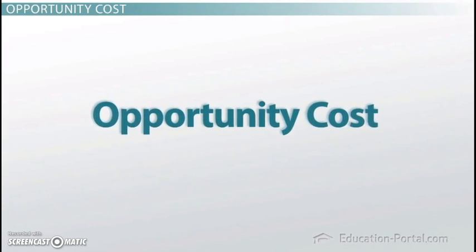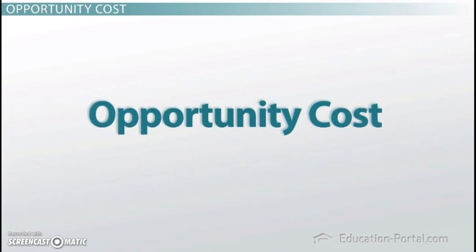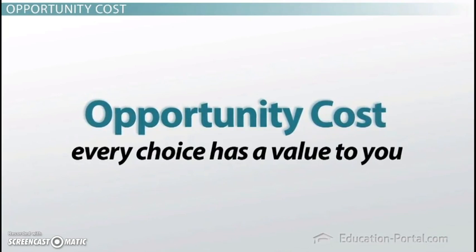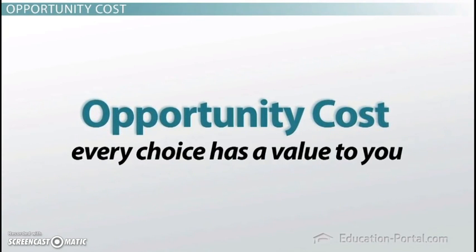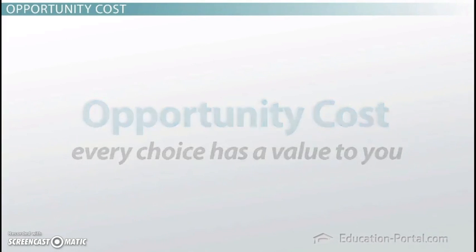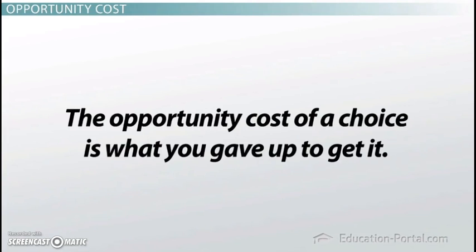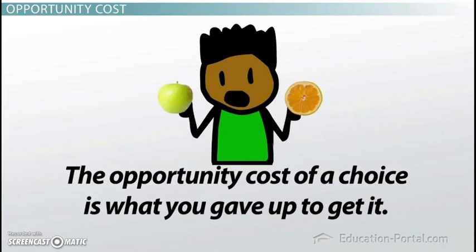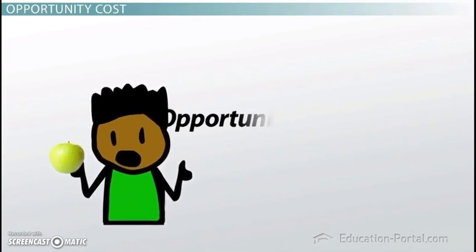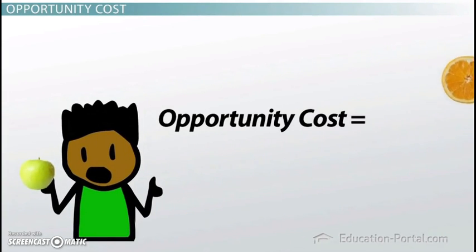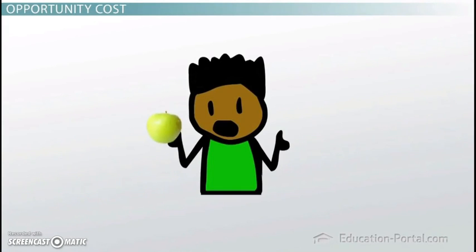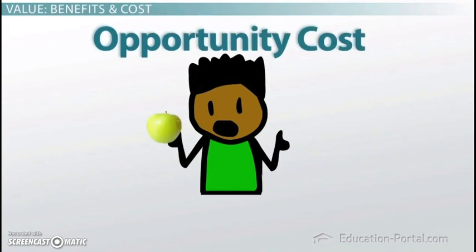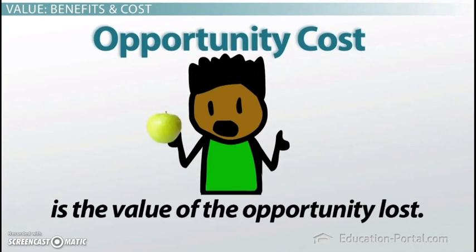Every time you make a choice, there's a certain value you place on that choice. Every choice has a value to you, and when you choose one thing over another, you're saying to yourself: I value this more than another choice I had. The opportunity cost of a choice is what you gave up to get it. If you have two choices — either an apple or an orange — and you choose the apple, then your opportunity cost is the orange you could have chosen but didn't. You gave up the opportunity to take the orange. In this way, opportunity cost is the value of the opportunity lost.